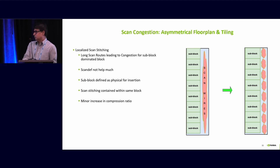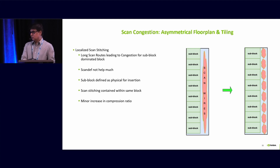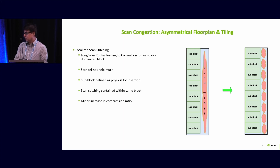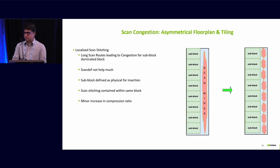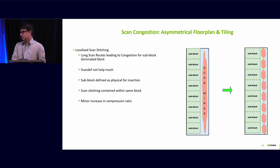Now let's discuss some scan congestion issues we address using ScanPro. There are some tiling blocks — blocks dominated by sub-blocks — where long scan routes are formed and scan depth does not help much. To address the scan congestion issue in tiling or sub-block-dominated blocks, we define the sub-blocks as physical regions during the insertion to make sure stitching happens within that sub-block. That reduces the long-route scan congestion. We still have some long scan routes for scan debug mode, and this increases the compression ratio slightly because we need a few more codec endpoints, but that is not a big concern.